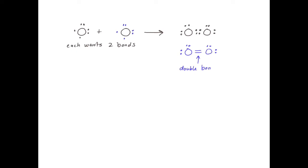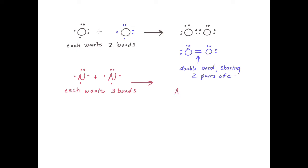When oxygen bonds to oxygen, each oxygen atom wants to form two bonds to get eight electrons around it. So when two oxygen atoms bond, we get a double bond — they share two pairs of electrons — and each atom also has two lone pairs around itself. We represent a double bond with two dashes. When two nitrogen atoms bond, each nitrogen wants three bonds to get eight electrons around it, so these atoms form a triple bond — sharing three pairs of electrons — represented with three dashes, and each nitrogen atom has one lone pair as well.